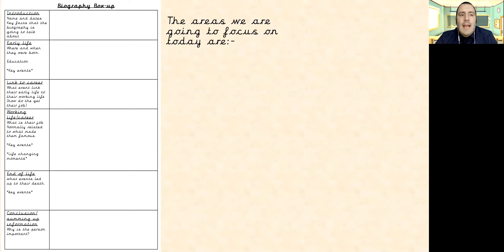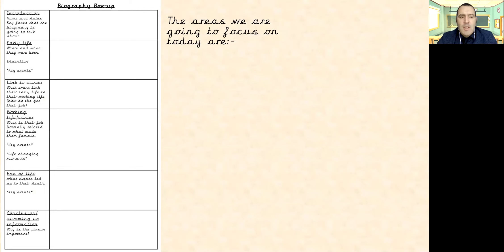We have our introduction — the names and dates, the key facts that the biography is going to talk about, the early life: where and when they were born, their education and any other key events from their early life. Then the link to their career — so what event links their early life to their working life, how do they get to their job. Their working life and career: what is their job, normally related to what's made them famous, any key events and any life-changing moments. Their end of life — what events have led up to their death, any key events in that build-up. And finally, our conclusion: summing up the information and discussing why the person is important.